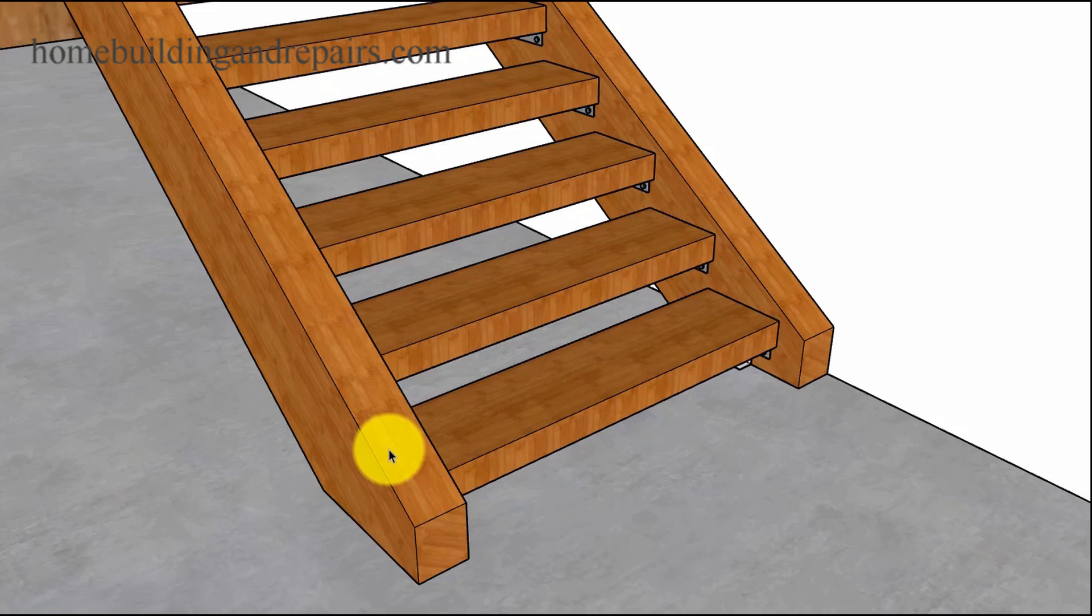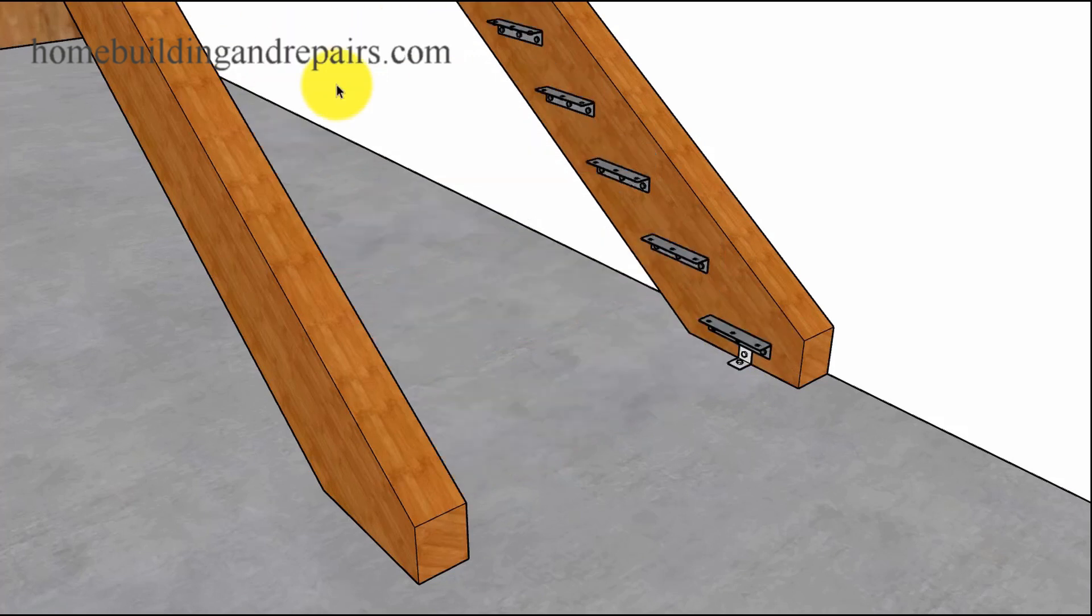And each one of these stringers were lifted into place one at a time. I actually used some type of a winch system to get each one up. There was no way I was going to be able to lift them up. I didn't have a crane or a forklift where I could lift it up. And the treads were installed one at a time and along with the brackets.